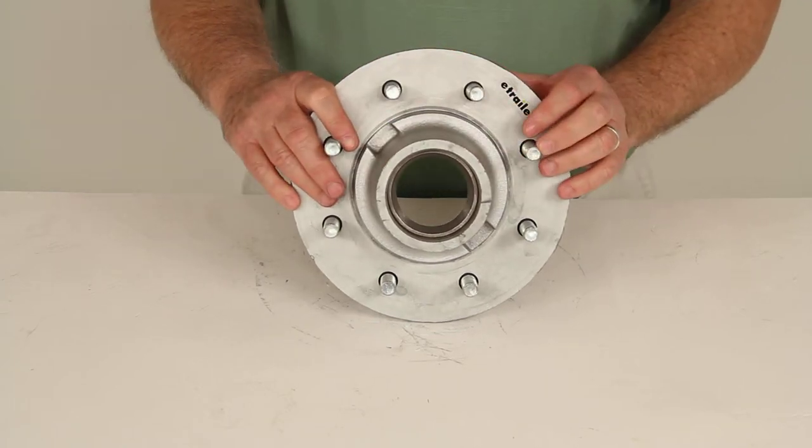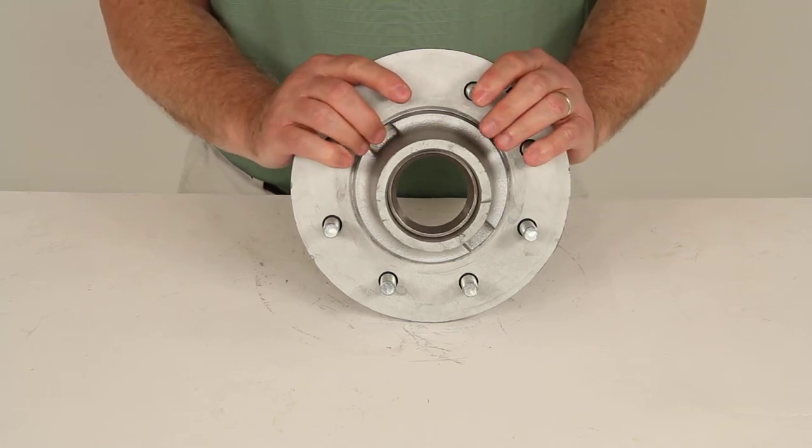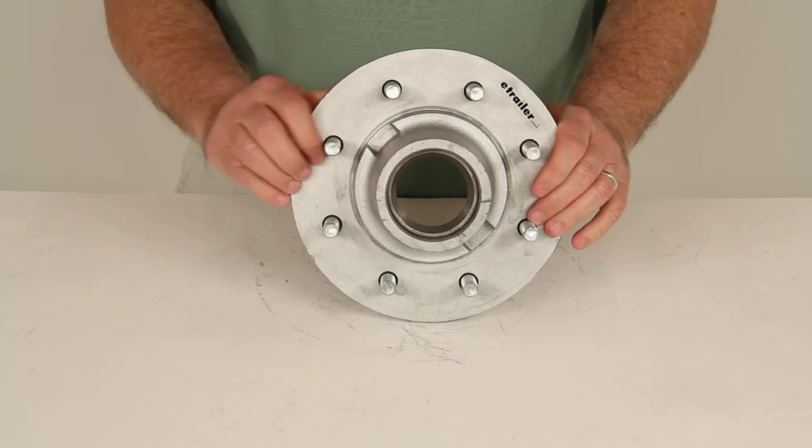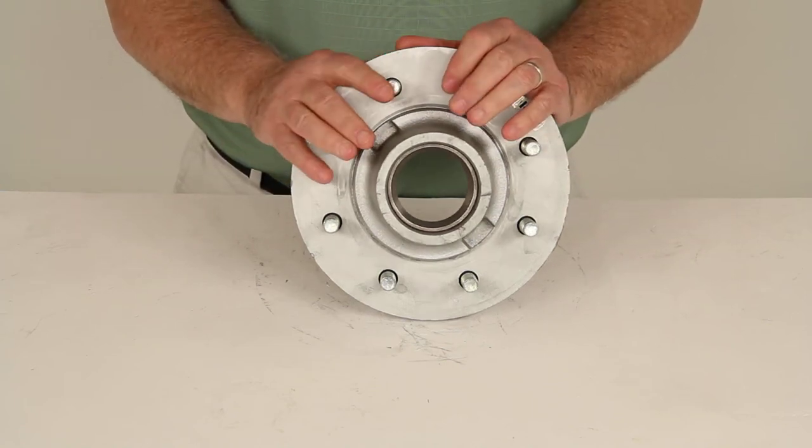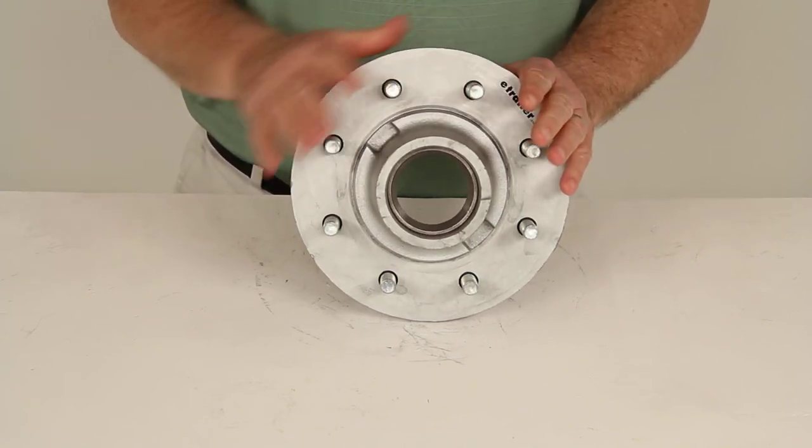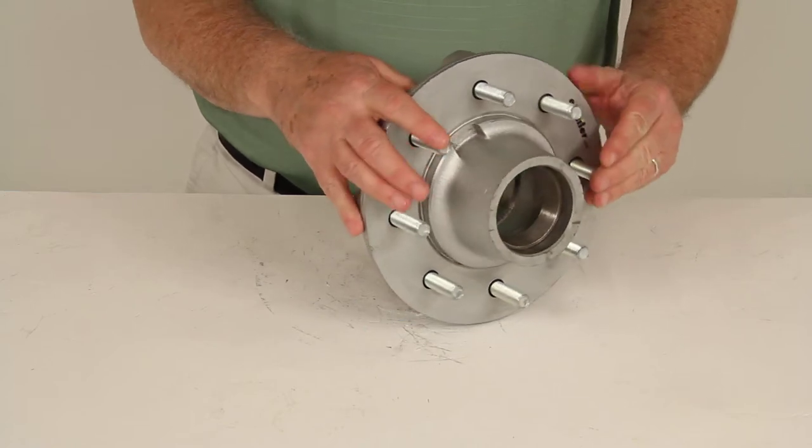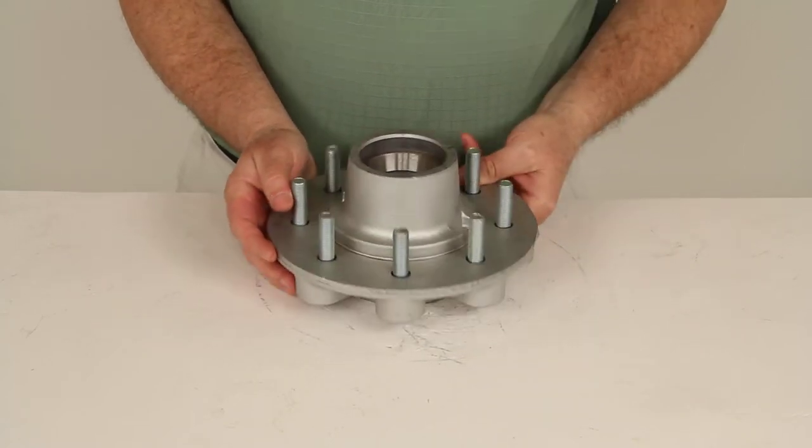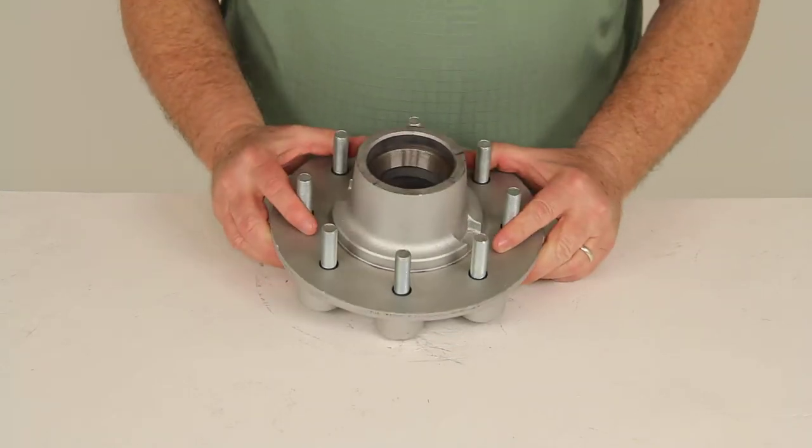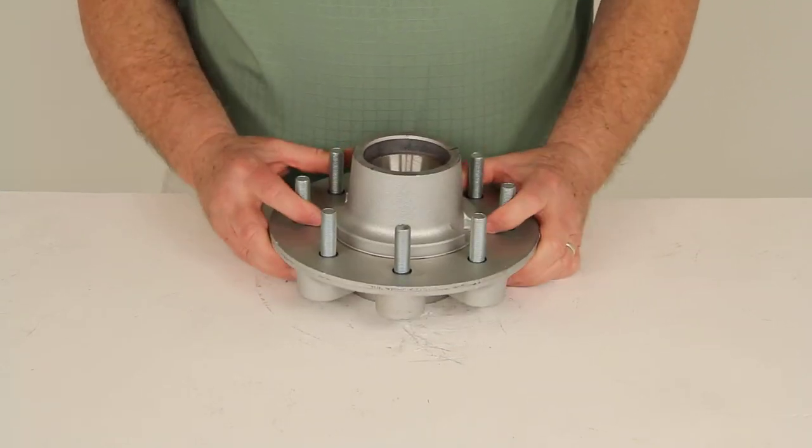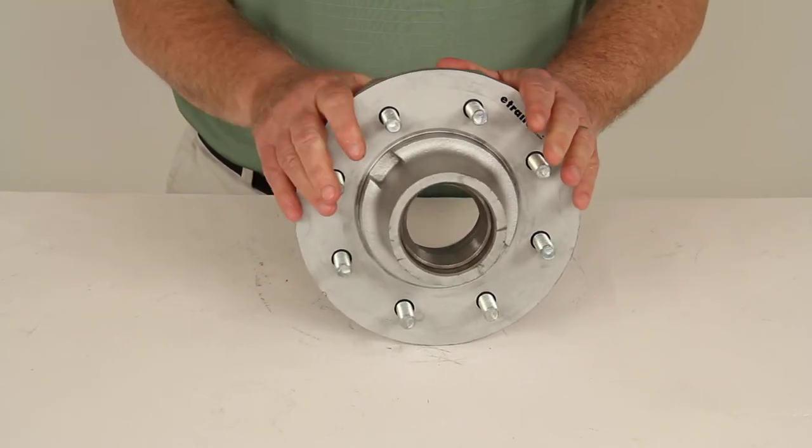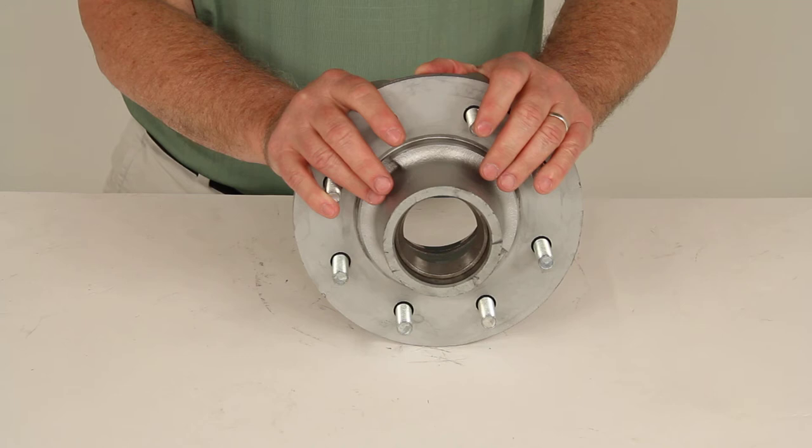Now this trailer hub has a Gal Dex zinc coating that'll resist corrosion, makes it ideal for use on your boat or snowmobile trailer, and it's durable enough for saltwater applications. All of the Gal Dex hubs are able to withstand 500 hours of constant exposure to saltwater mist. This 500-hour salt spray rating indicates that this product is durable enough to use in freshwater environments, but it also could be used on trailers in a saltwater environment.